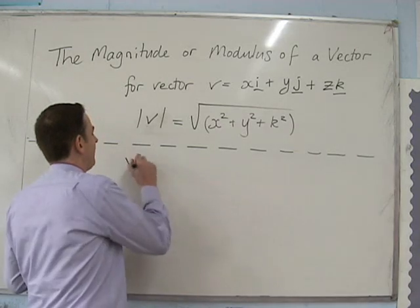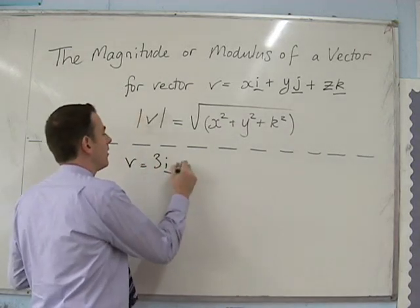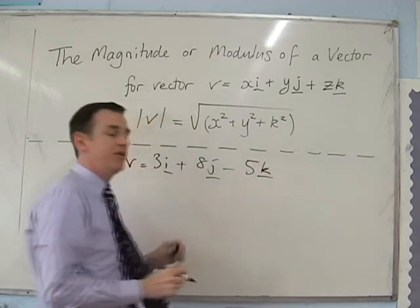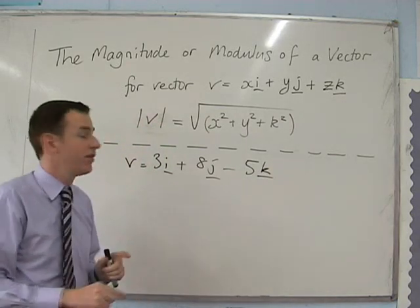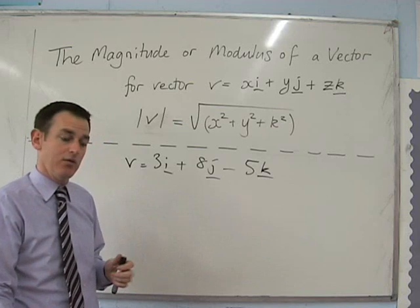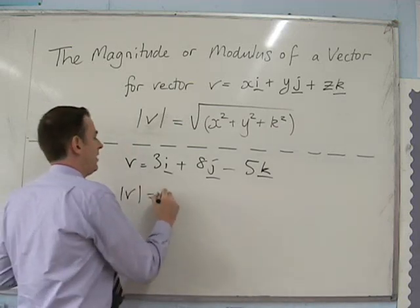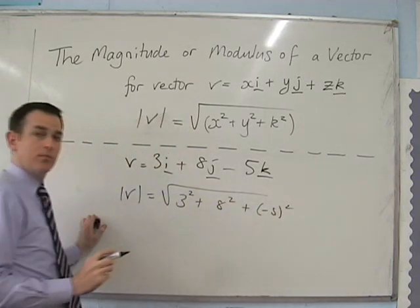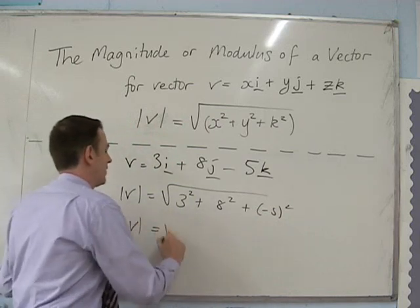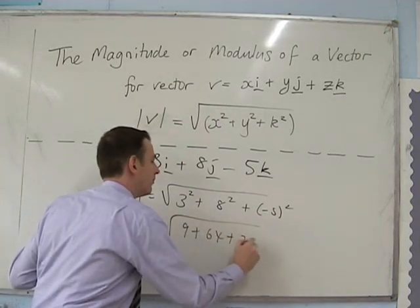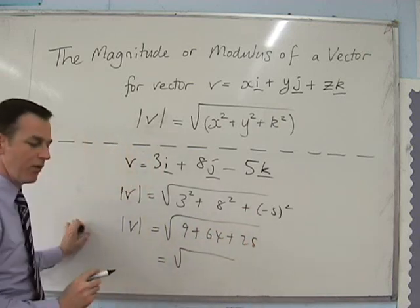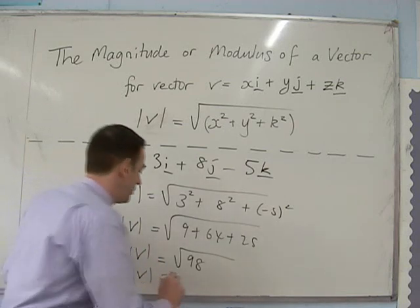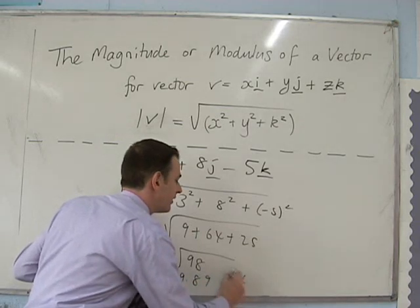So for example if we've got a vector v equals 3i plus 8j minus 5k, for a position vector this is just saying that this has got position 3 along, 8 across and then 5 down. The modulus is going to be equal to the square root of 3 squared plus 8 squared plus minus 5 squared, which is going to be the square root of 9 plus 64 plus 25. That will all turn out to be square root of 98, so the modulus of the magnitude of this vector is equal to 9.90 to 3 significant figures.